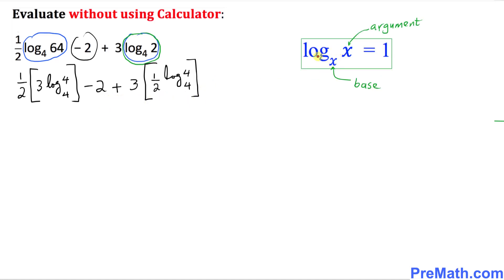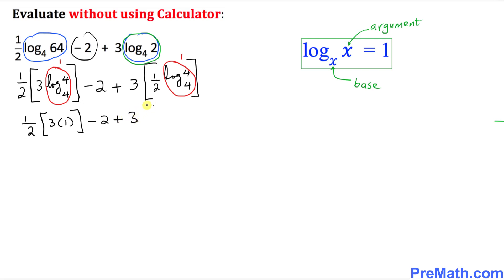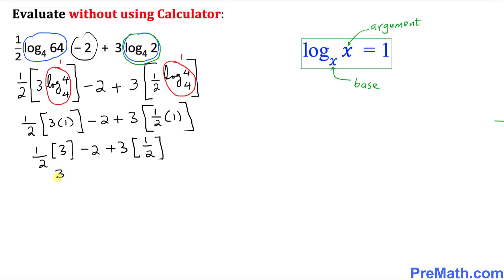Now we're going to use this well-known fact: if you have log of x with base x — where x is both the argument and the base — it's always equal to 1. So the log of 4 with base 4 terms both equal 1. The expression simplifies to one-half times 3 times 1, minus 2, plus 3 times one-half times 1, which becomes 3 over 2 minus 2 plus 3 over 2.